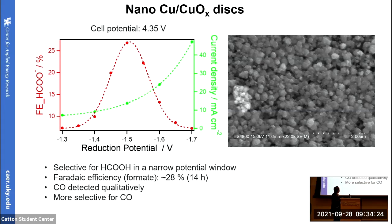Here are the results from copper/copper oxide nanodiscs. This is the Faradaic efficiency for formate as a function of reduction potential from -1.3 to -1.4 V, and this is the corresponding current density. Using this catalyst, we got a Faradaic efficiency of 28% over 14 hours, and it produces formic acid in a very narrow potential range, around -1.55 V. Literature also reveals that this catalyst is very selective for carbon monoxide, but it does produce formic acid to some amount.